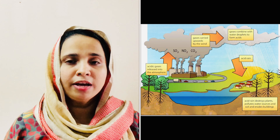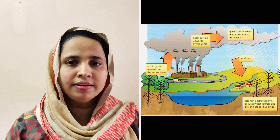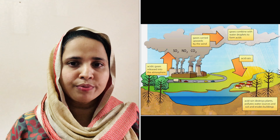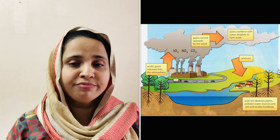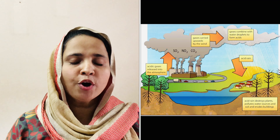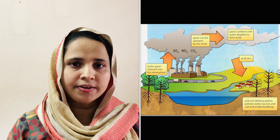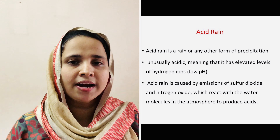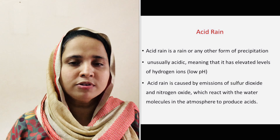These acids cause diseases in human beings and animals. They are brought down to the earth as constituents of rain, snow, fog, etc. — that is wet deposition — or as being incorporated into dust, smoke, etc. — that is dry deposition. This acid deposition on the earth's surface is called acid rain.